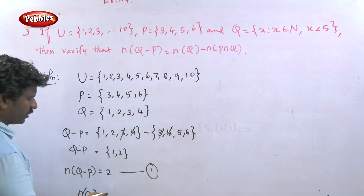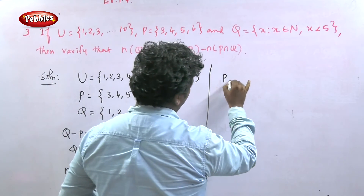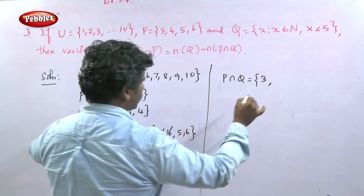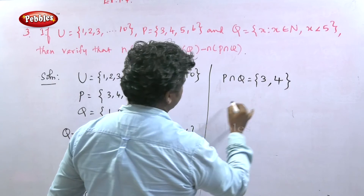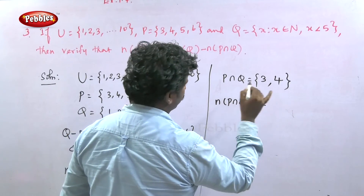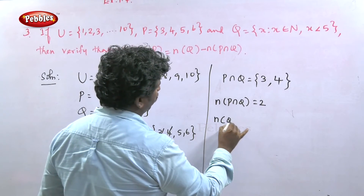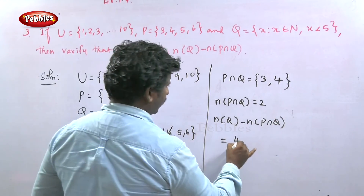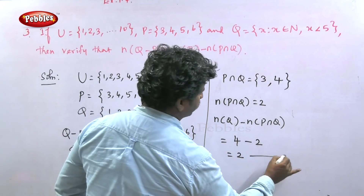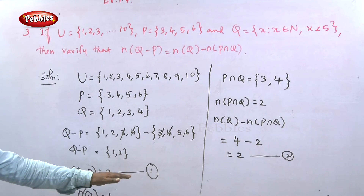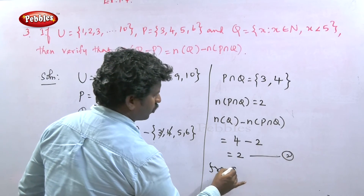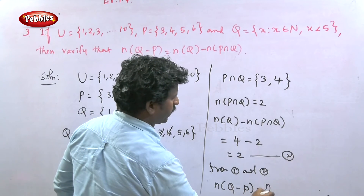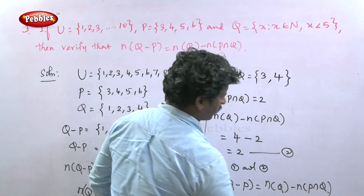n of Q equals 4 (elements: 1, 2, 3, 4). Finding P intersection Q — common values: 3 is common, 4 is common; 5 and 6 are not common. So n of P intersection Q equals 2. Substituting: n of Q minus n of P intersection Q equals 4 minus 2 equals 2. This is equation two. Since equations one and two are both equal to 2, n of Q minus P equals n of Q minus n of P intersection Q is verified.